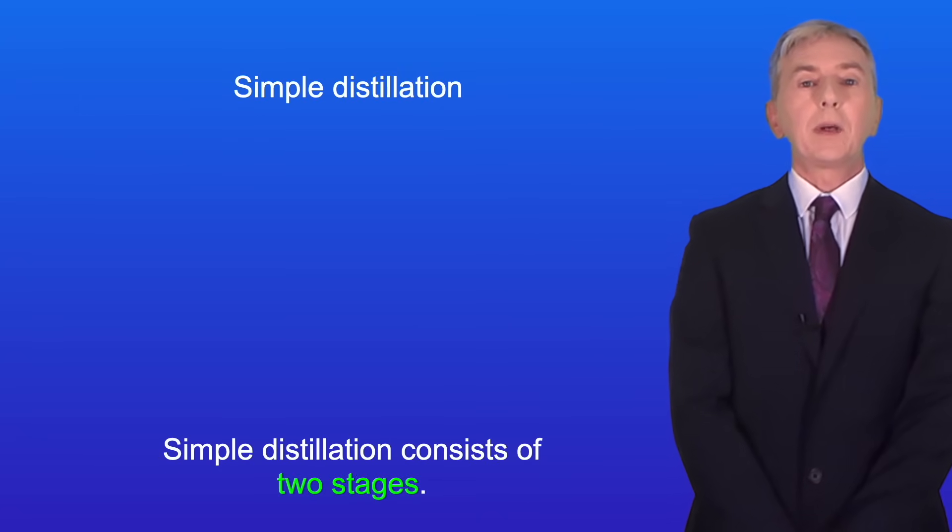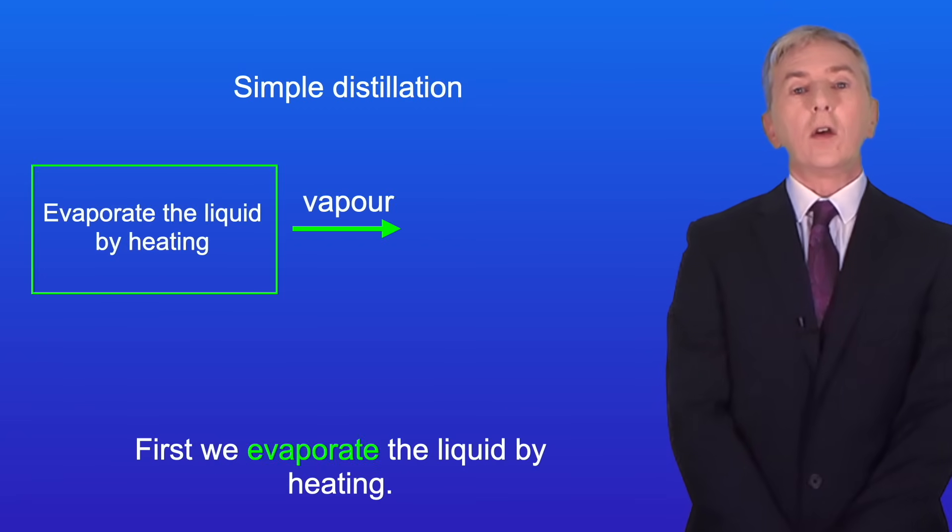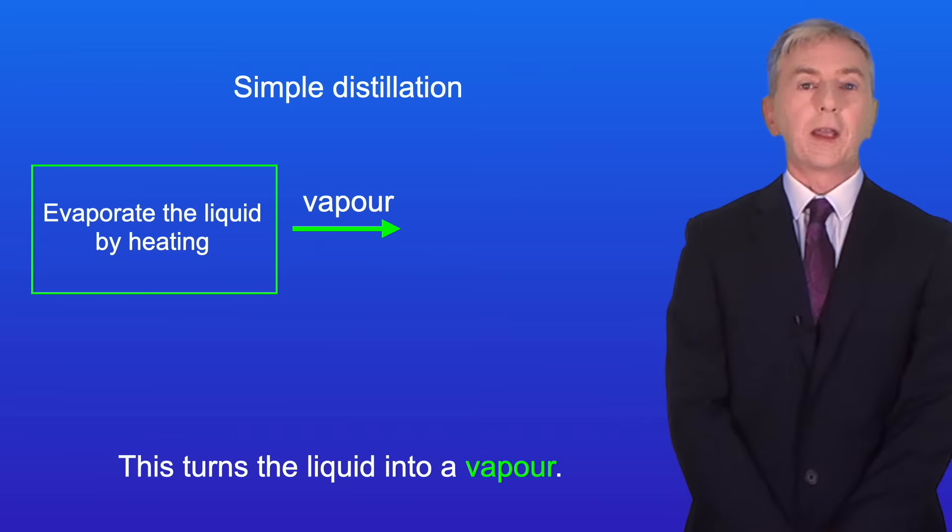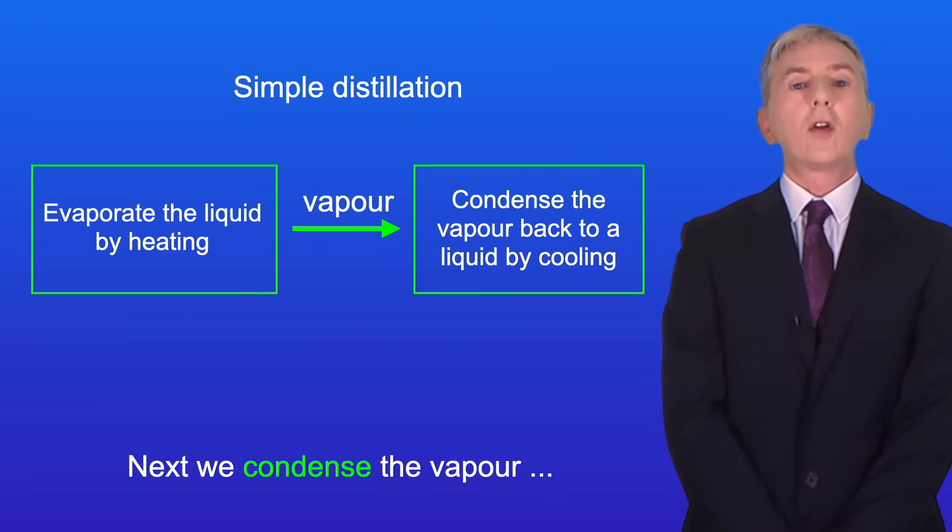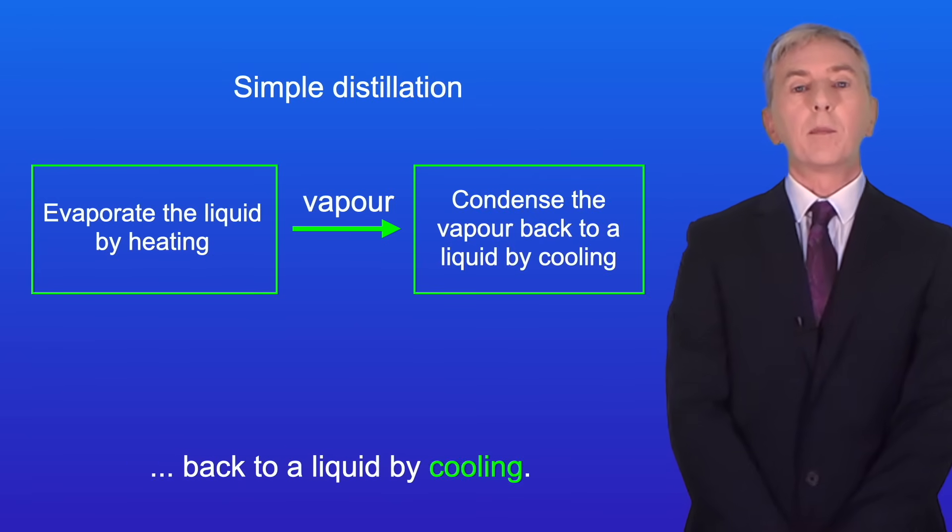Okay now simple distillation consists of two stages. First we evaporate the liquid by heating. This turns the liquid into a vapor. Next we condense the vapor back to a liquid by cooling.